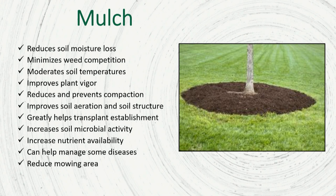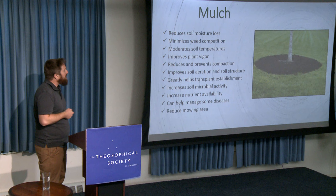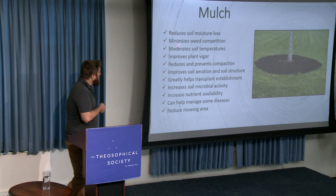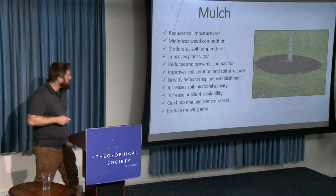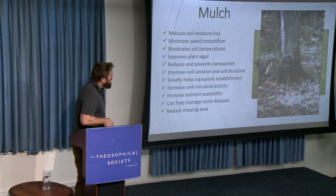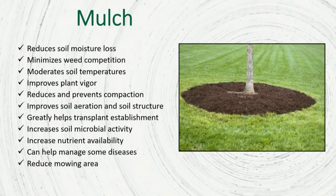Mulch is a fascinating topic I could spend the whole hour on. There are so many benefits: reduced soil moisture loss, minimized weed competition, and much more. Simply putting a two- to four-inch layer of wood chip mulch around the base of a tree provides enormous benefits. We're taking lessons from nature — the organic duff material you see in the woods with leaves and sticks is exactly what mulch mimics.